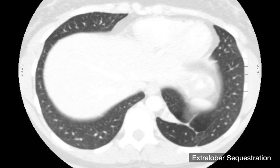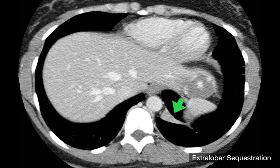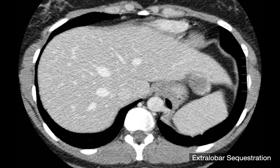This next image shows what an extralobar sequestration may look like — that fat triangle at the medial left lung base. Extralobar sequestrations behave a lot like atelectasis because they don't communicate with the tracheobronchial tree, so they don't get the chance of having air introduced to them. They're not going to be a large air-containing consolidation generally because they're relatively sterile. On the next image slice, you can just barely make out the enhanced blood vessel coming off the aorta feeding this triangular mass — another specific mass, in this case an extralobar sequestration.